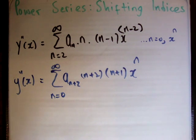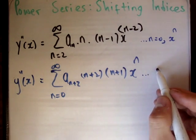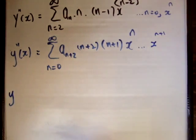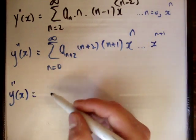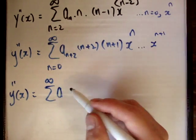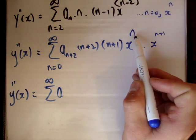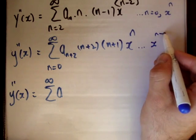And similarly, if we wanted to shift this upwards. Say if we wanted to go to x to the n plus 1. We just insert everywhere n plus 1. So y double prime of x is the sum to infinity of a... Actually, say if we wanted to go to n minus 1, just for the crack, n minus 1.